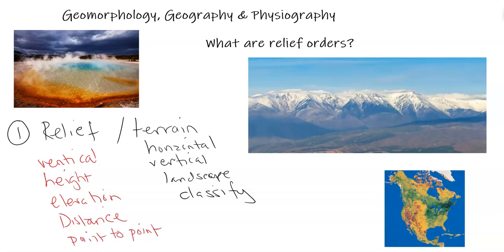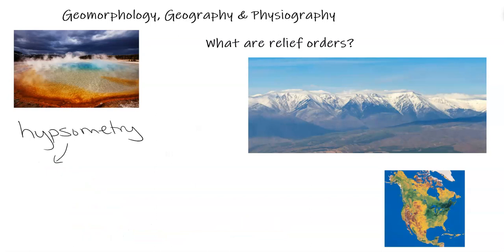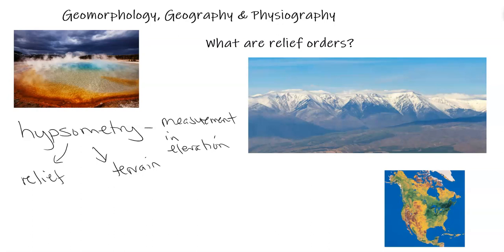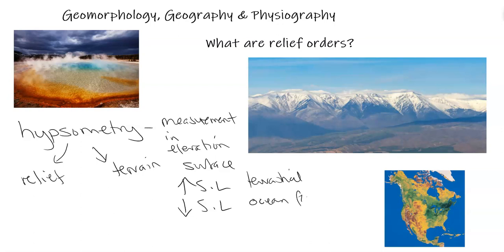The usual reference point is sea level, even though we know that sea level is not really level. When discussing relief and terrain of a certain landscape, you can also discuss the scientific discipline of hypsometry — the measurement of elevation of the surface, both above sea level and below sea level.